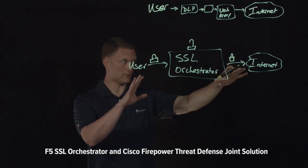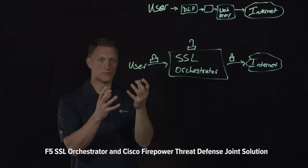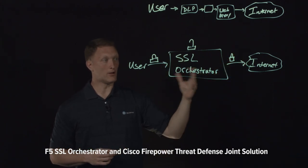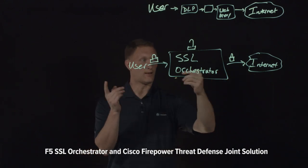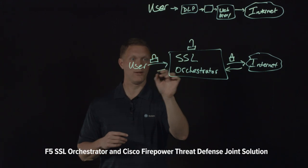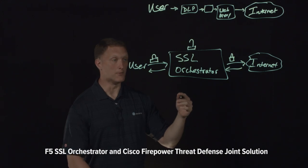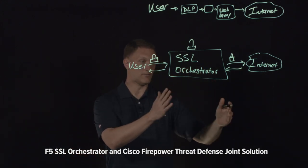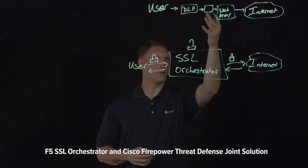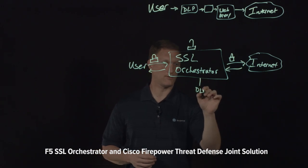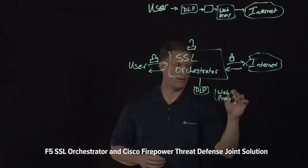This solution supports both inbound and outbound traffic. The outbound scenario covers internal enterprise users destined for external websites, but you can also protect a data center from external users coming in — traffic can flow both ways depending on how you set things up. Along with the SSL Orchestrator, you may have security devices like a data loss prevention device and a web proxy in your security chain.